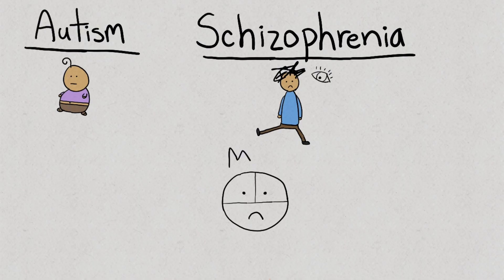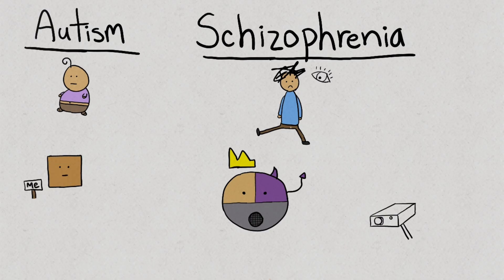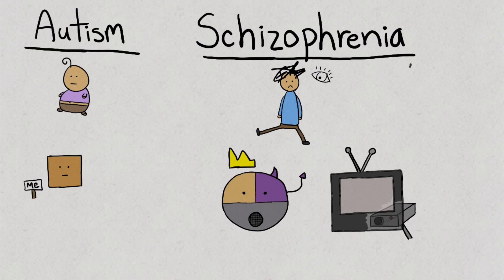Schizophrenia presents as a much more delusional sense of a fragmented self, while autistic patients tend to have an intact, albeit minimal, self. Schizophrenia also has more positive affectations, such as hallucinations, paranoia, and delusions, that are typically absent from autistic patients.